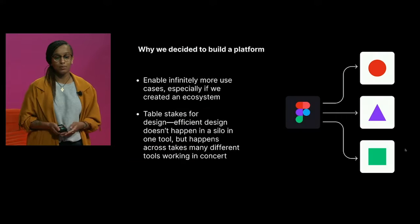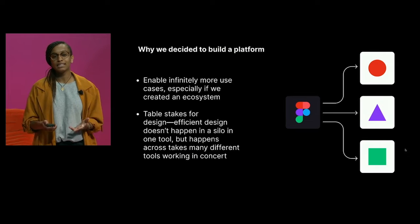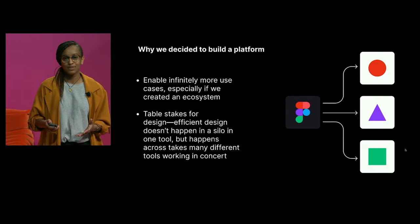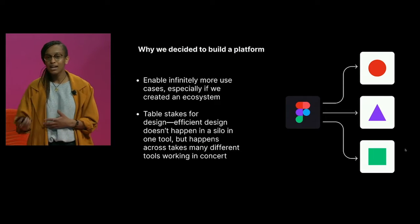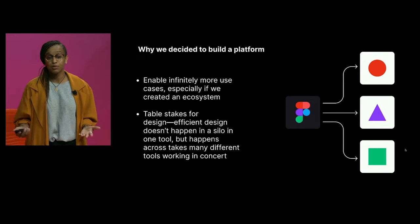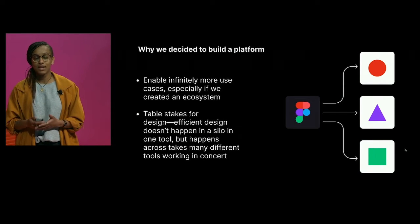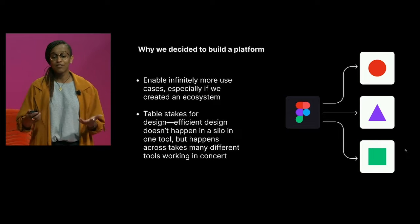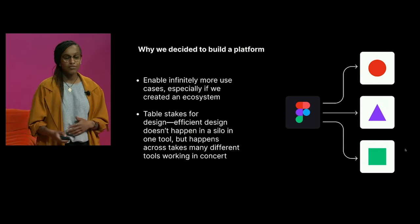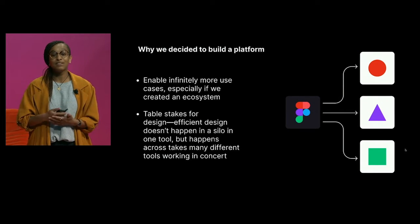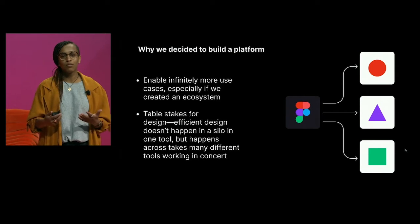Before we talk about how Figma built our platform, I want to start with the why — why we decided to build a platform. We knew that if we created an API for users to extend our product, it would allow us to support infinitely more use cases: fitting together repetitive steps designers do throughout the design process, quickly generating placeholder content, importing real data into designs, facilitating developer handoff, and more — all requiring some form of extensibility.